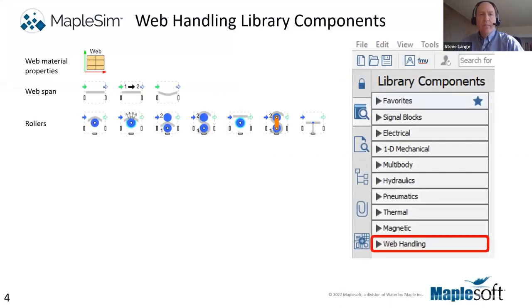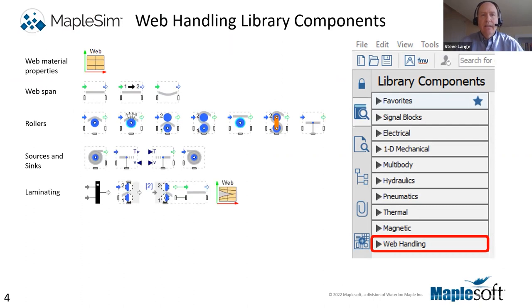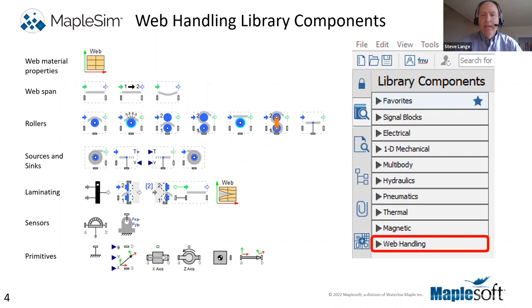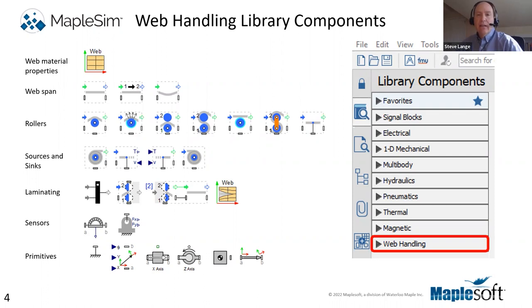Some background on what the web handling library is: if you're not familiar with MapleSim, it's simulation software that has a number of libraries for simulating systems. These libraries include things like mechanical, electrical, thermal, and magnetic libraries, and they all have components that you can link together to define a system.